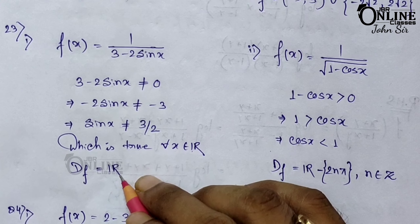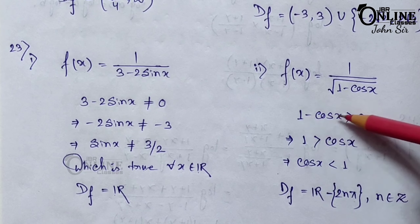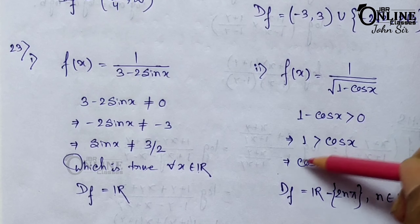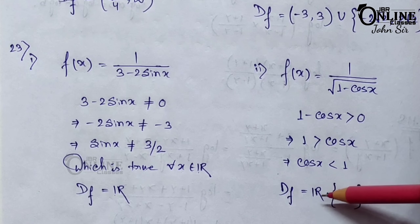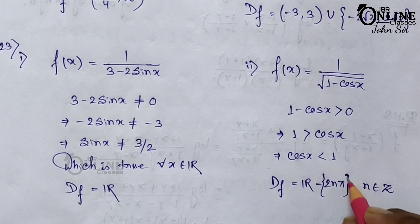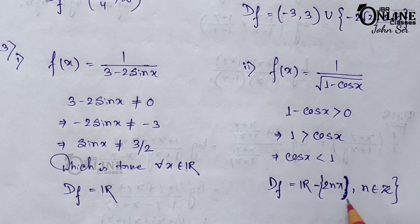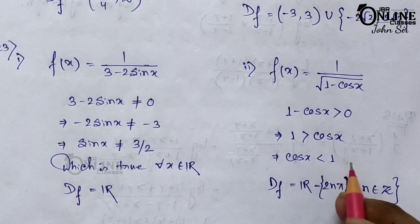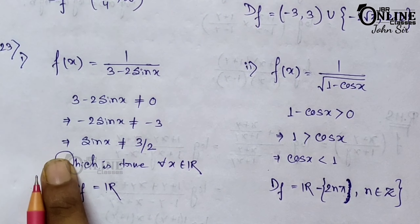Sum number 23(2): f(x) = 1/√(1 − cos x). For this to be defined, 1 − cos x must be greater than 0, so cos x < 1. This is true for any real number except where cos x = 1, which occurs at x = 2nπ for any integer n. So the domain is all real numbers minus {2nπ : n ∈ ℤ}.